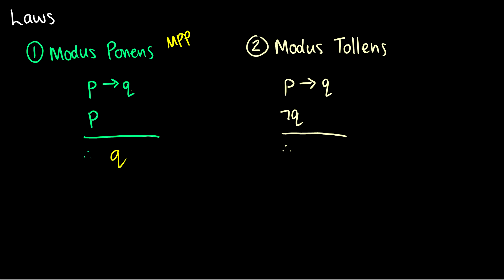Two, modus tollens. Modus tollens is the opposite way. So this is sometimes known as denying the consequent. So if we have P arrow Q, and not Q, then we get not P. And if you remember, P arrow Q is logically equivalent to not Q arrow not P. So this is kind of like doing modus ponens on the contrapositive. You can think of it like that. And this is sometimes shortened as MTT for modus tollendo tollens.